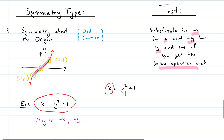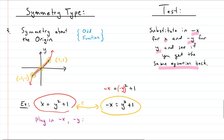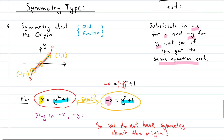Substituting negative x and negative y into x equals y squared plus one gives negative x equals negative y squared plus one, which simplifies to negative x equals y squared plus one. Comparing this to the original: the y squared plus one part is identical, but the left side has negative x instead of x. These are not the same, so we do not have symmetry about the origin. Hopefully this gave you a glimpse into the different types of symmetry and the algebraic tests to identify them.